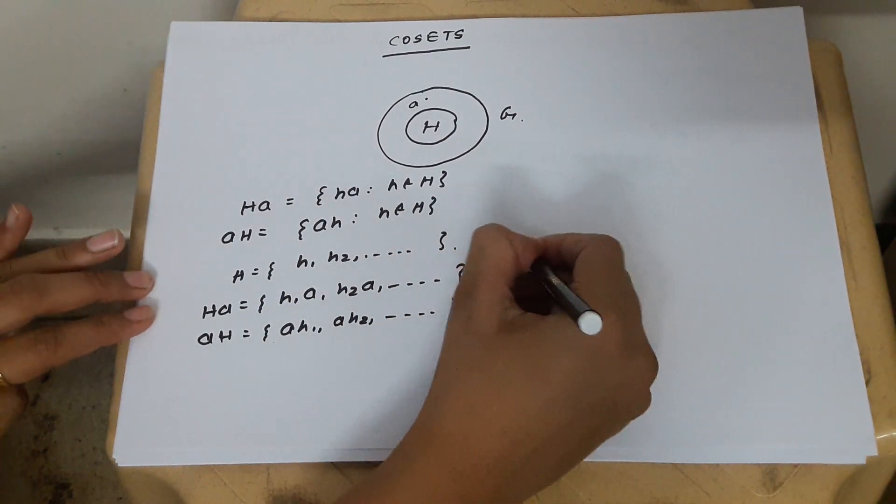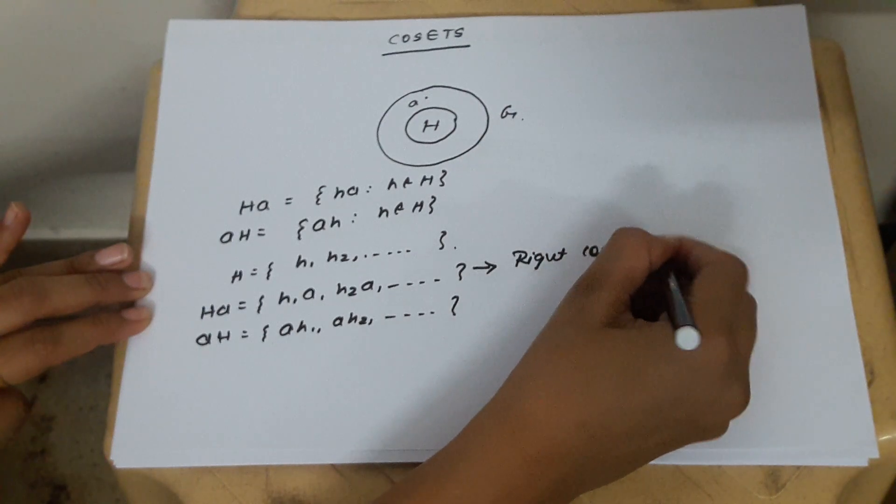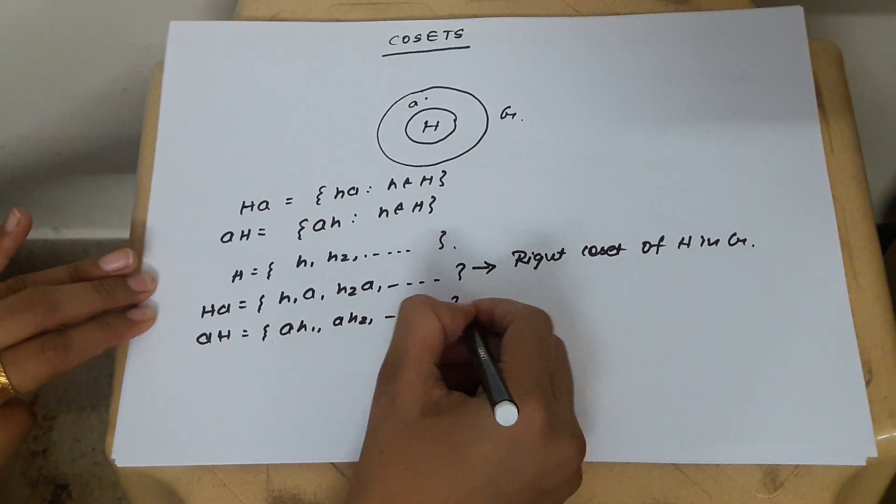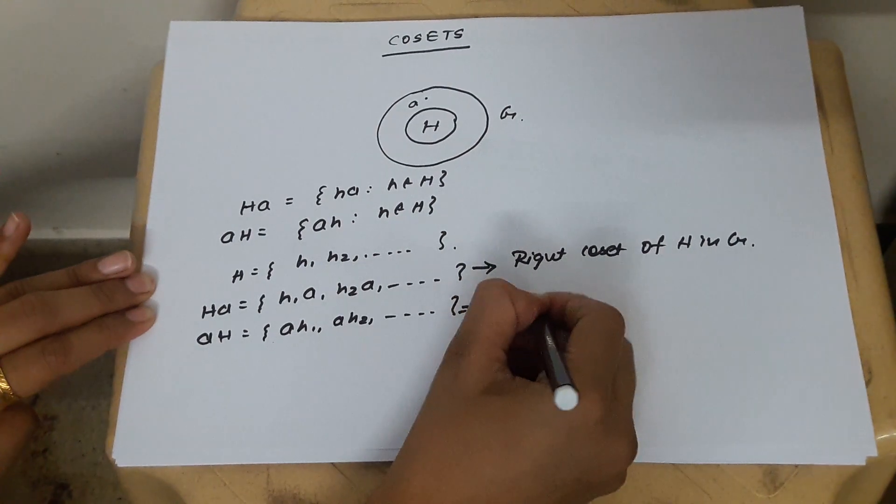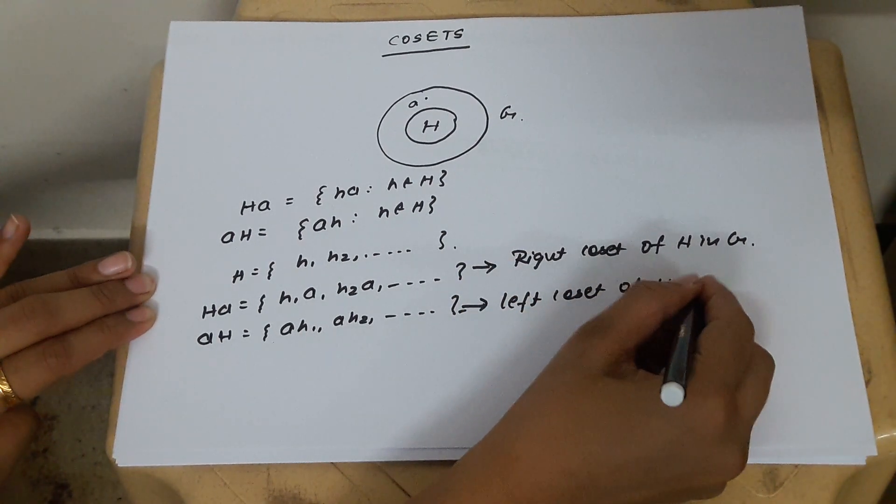Then, HA is called right coset of H in G and this is called left coset of H in G.